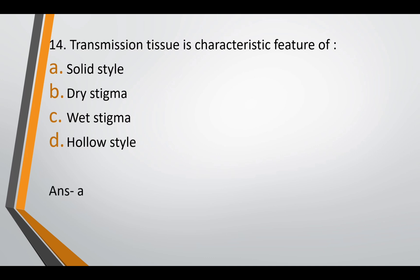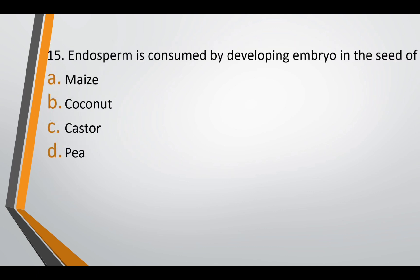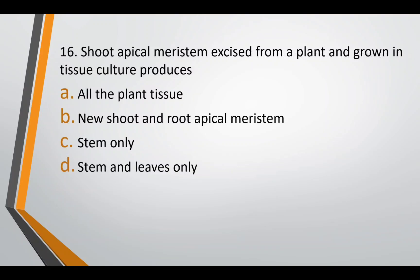Question fifteen: endosperm is consumed by the developing embryo in the seed of — maize, coconut, castor, or pea. The correct answer is option D — pea. Question sixteen: shoot apical meristem excised from a plant and grown in tissue culture produces — all plant tissue, new shoot and root apical meristems, stem only, or stem and leaves only. The correct answer is option D — it produces stem and leaves only.